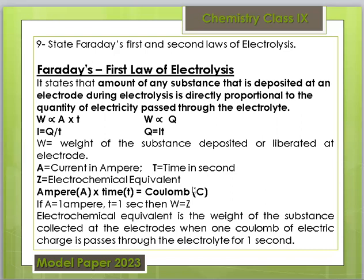When we take one ampere for one second, we have the current passed. The resulting weight deposited is equal to Z. So W = Z × I × T. The electrochemical equivalent Z is the weight of a substance collected at the electrode when one coulomb of electric charge is passed — that is, one ampere for one second.